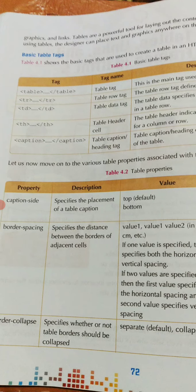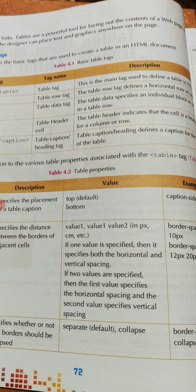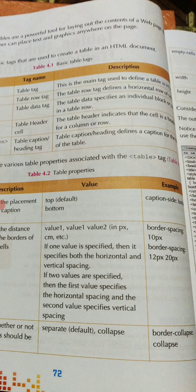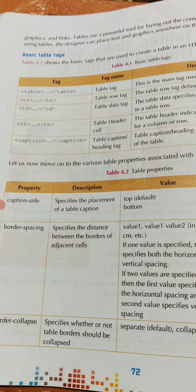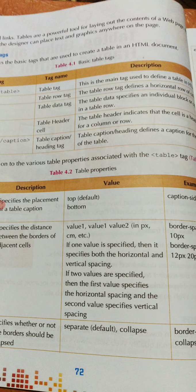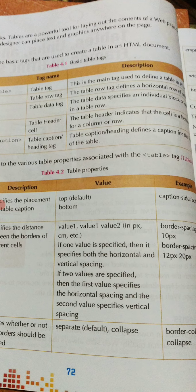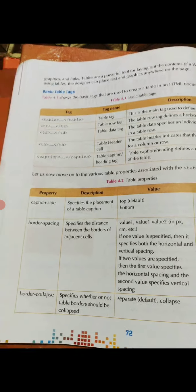The fifth and last tag is the caption tag — the table caption or heading tag. This defines a caption for the data of the table. The opening and closing caption tags help to give the heading or caption of the table.